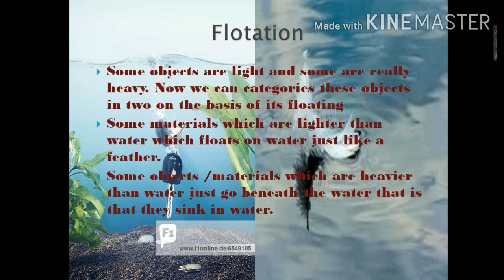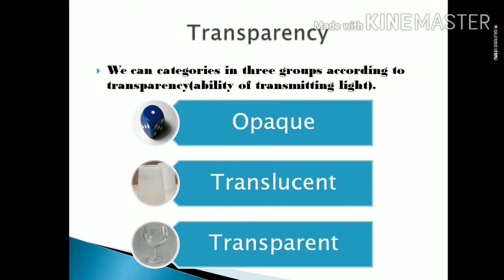This is the last basic property we are going to study, which is known as transparency. We can categorize substances into three groups according to transparency. Transparency is the ability of transmitting light.